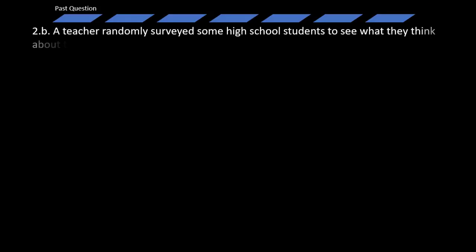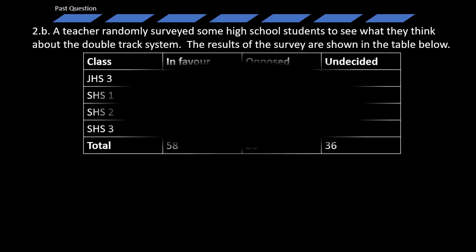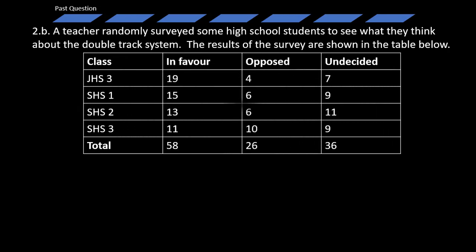A teacher randomly surveyed some high school students to see what they think about the double track system. The results of the survey are shown in the table below. For GHS3 students, 19 were in favor of it, 4 opposed it, and 7 did not make any decision.